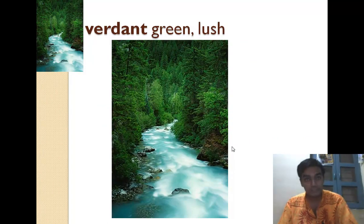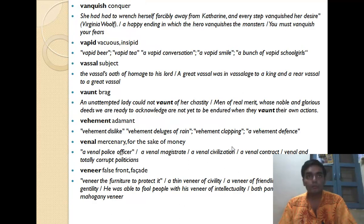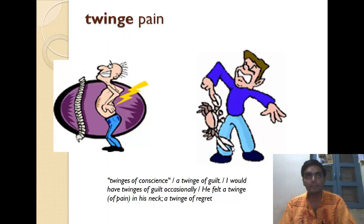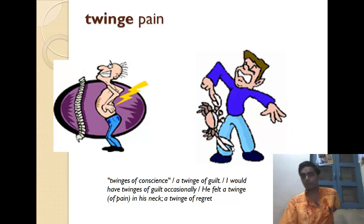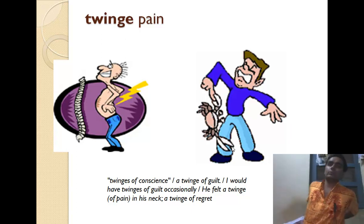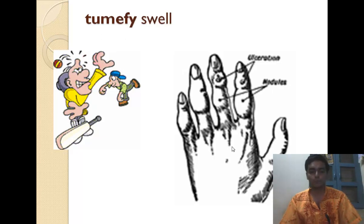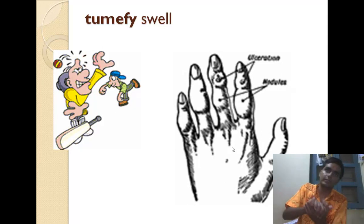Verdant means green and lush — like a verdant forest. Undulant means to fluctuate, like a leaf that undulates. Twinge means pain — you can get a back twinge when you sit a lot. Tussock is a cluster of coarse grass. Tumify means swelling, which can happen in the hand after typing a lot.